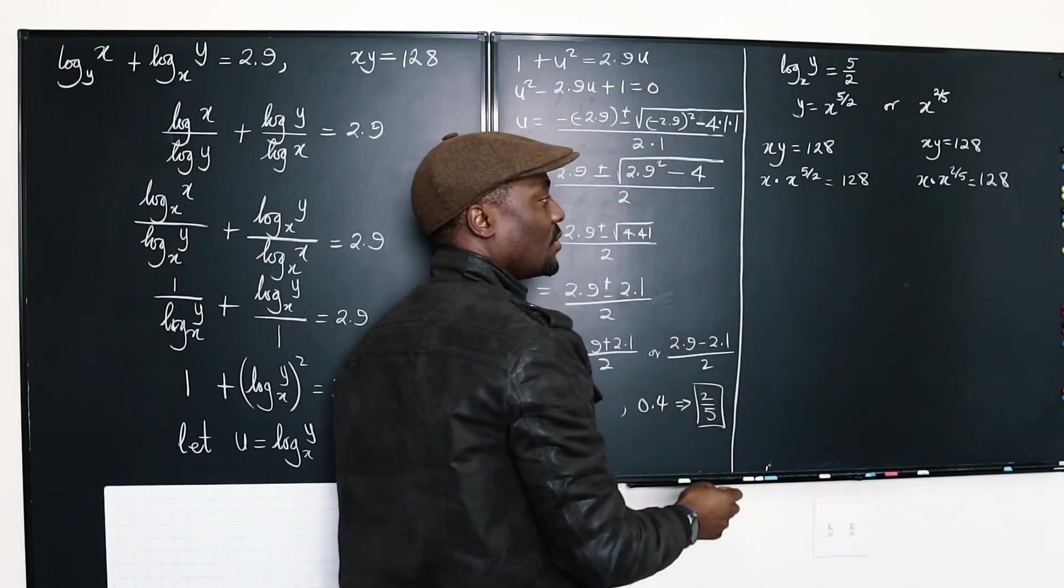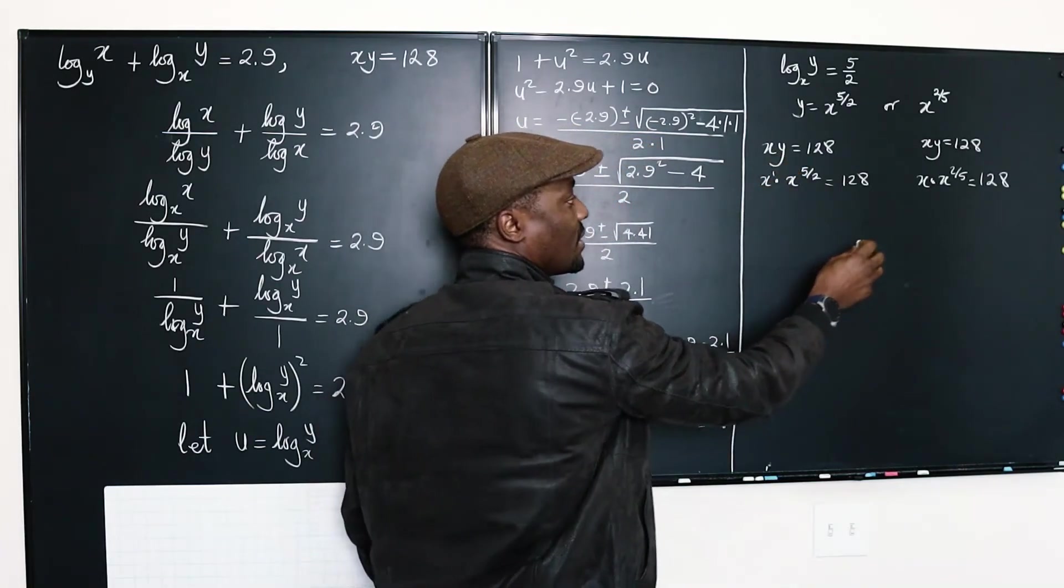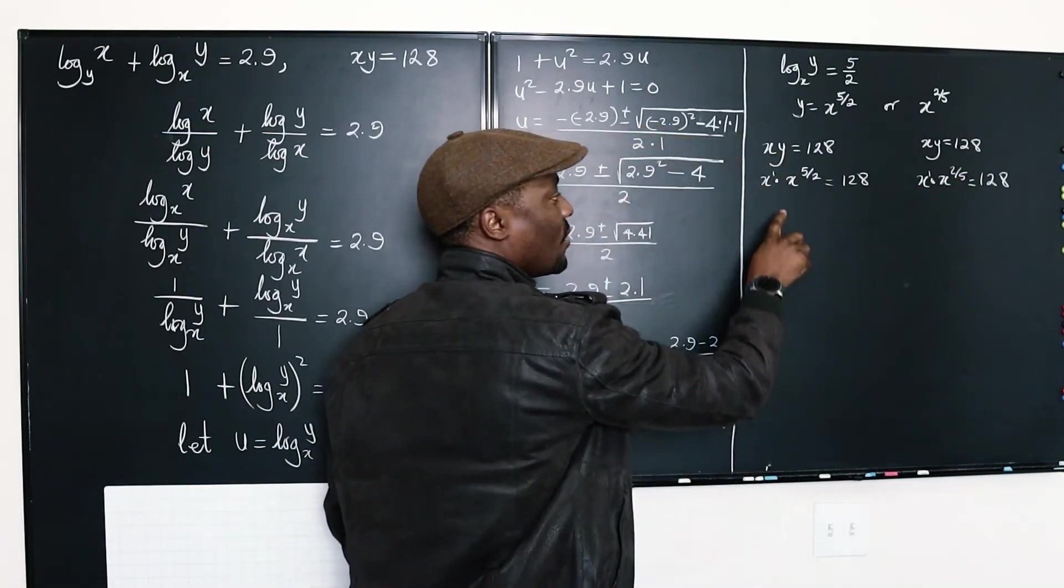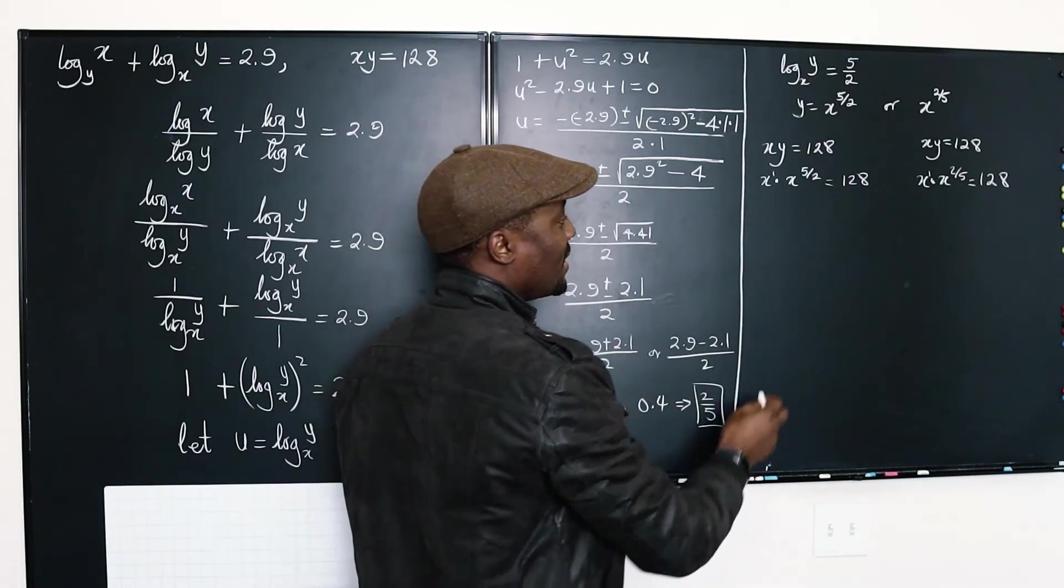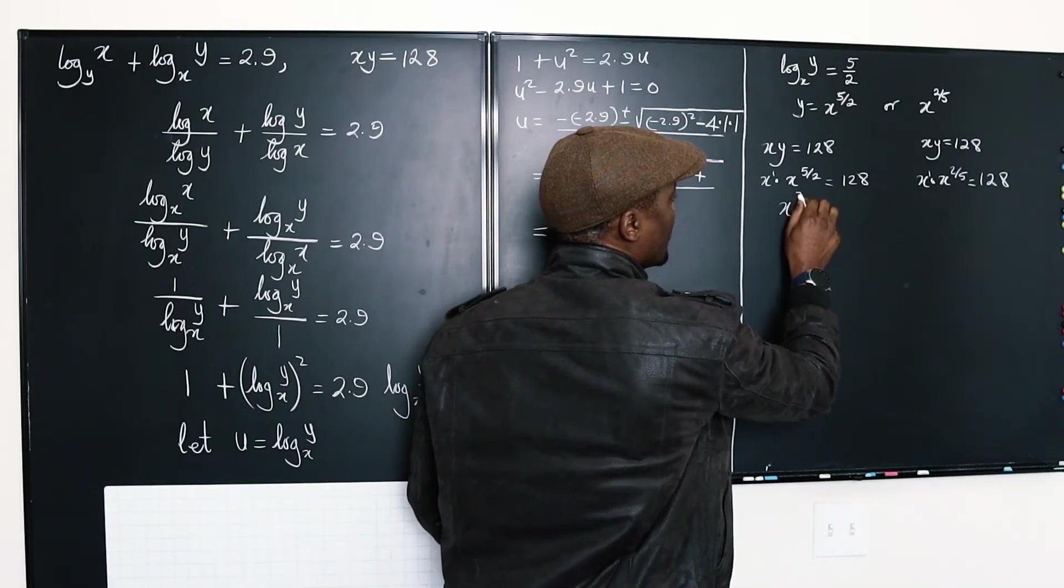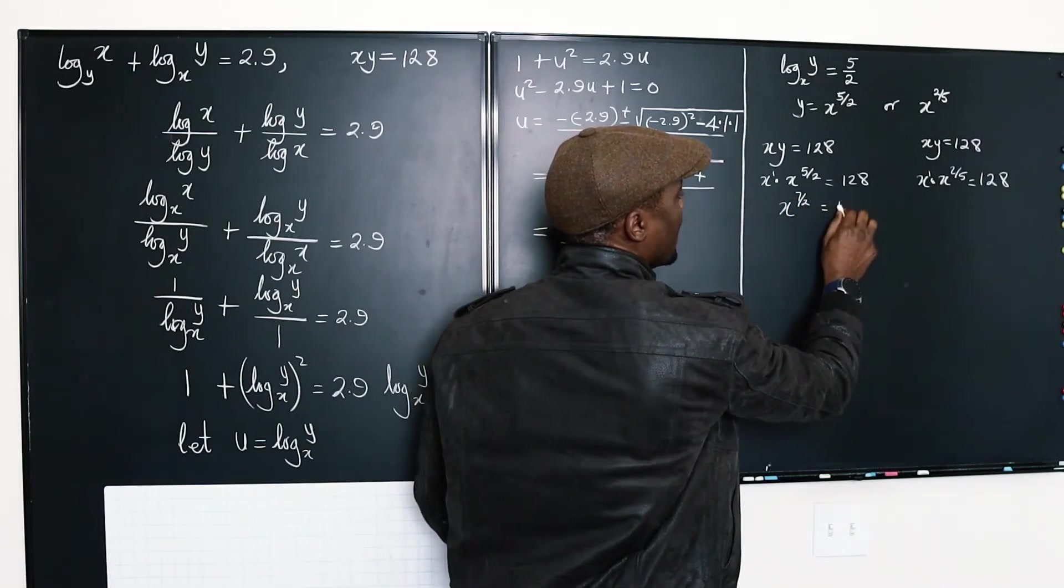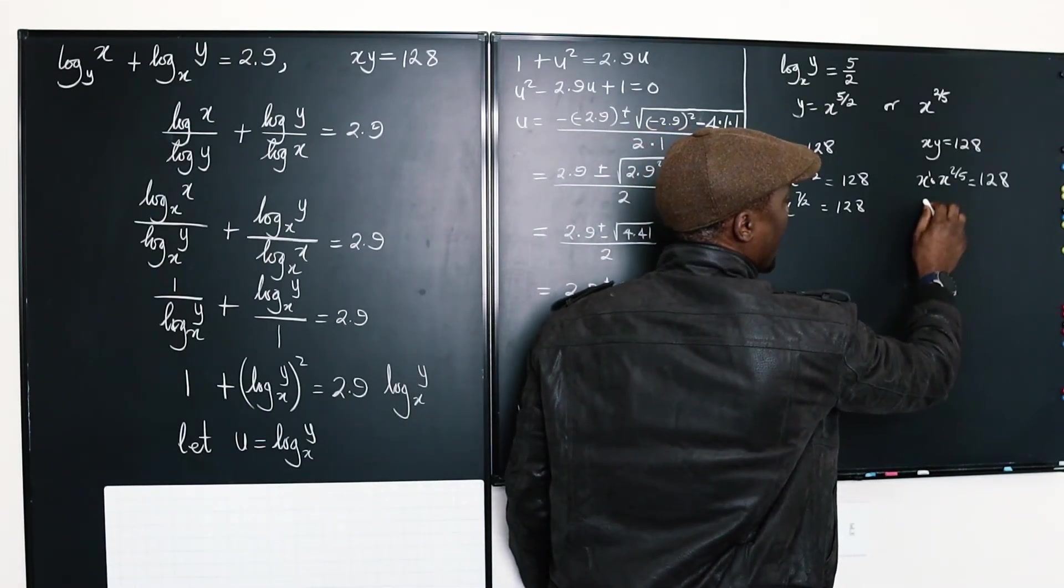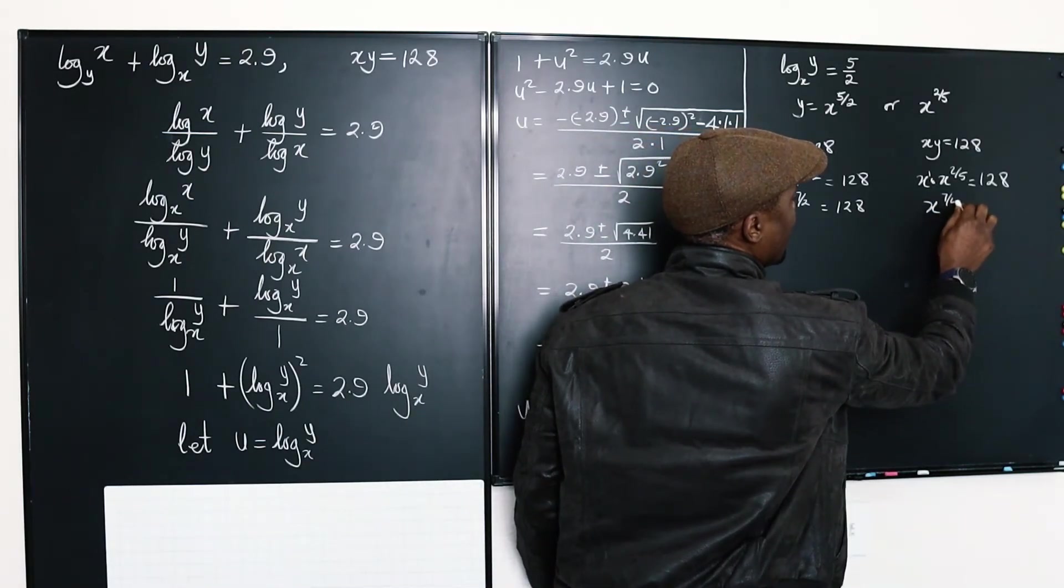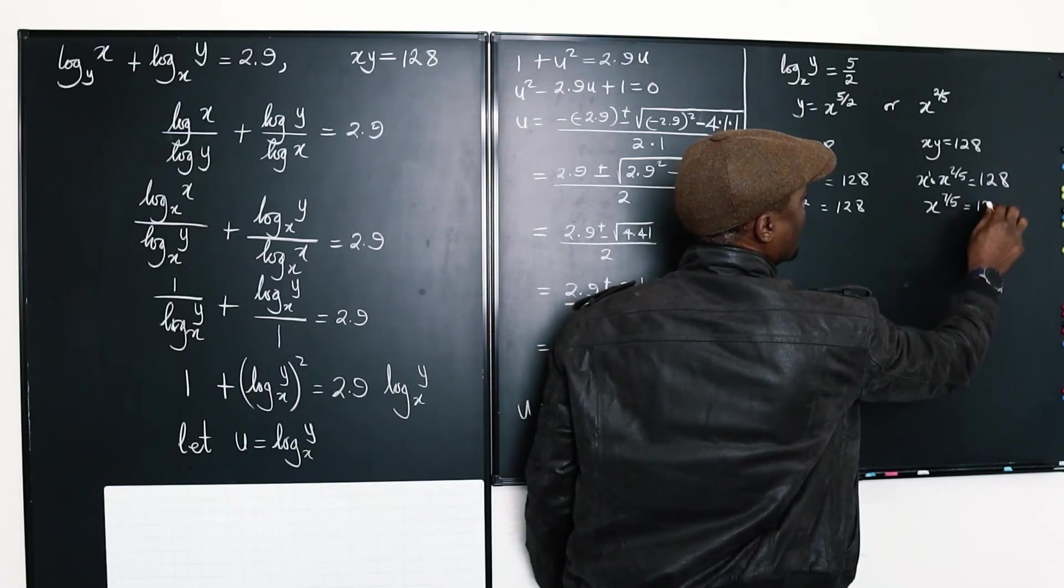Now this is easy to solve because this is x to the 1st. This is x to the 1st. When you add 1 to 5 over 2, it's like adding 2 over 2 to 5 over 2. That gives you 7 over 2. So x to the 7 halves is 128. And in this case, it's going to be x to the 7 fifth is 128.